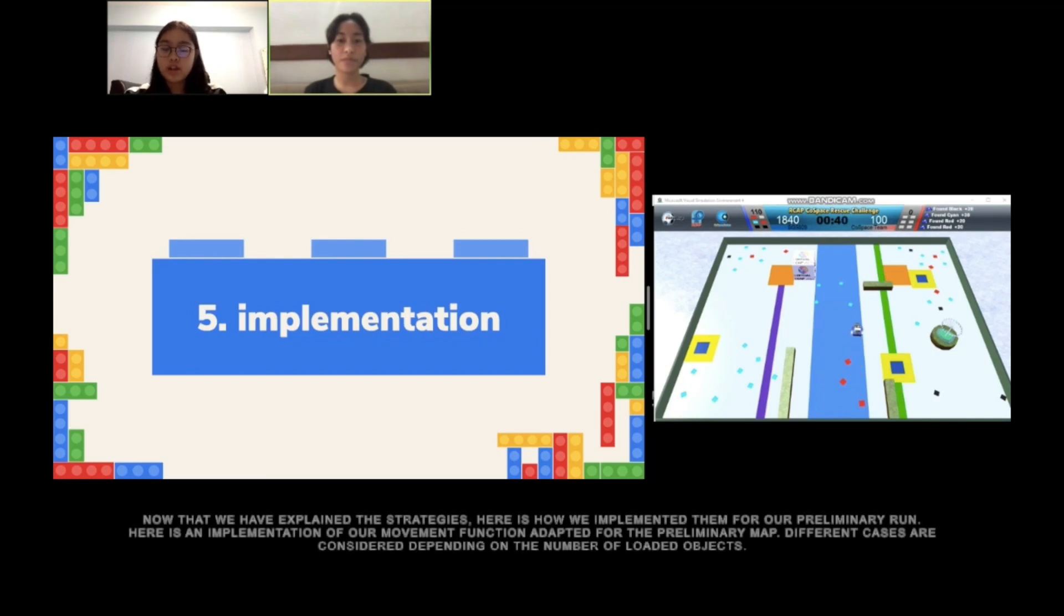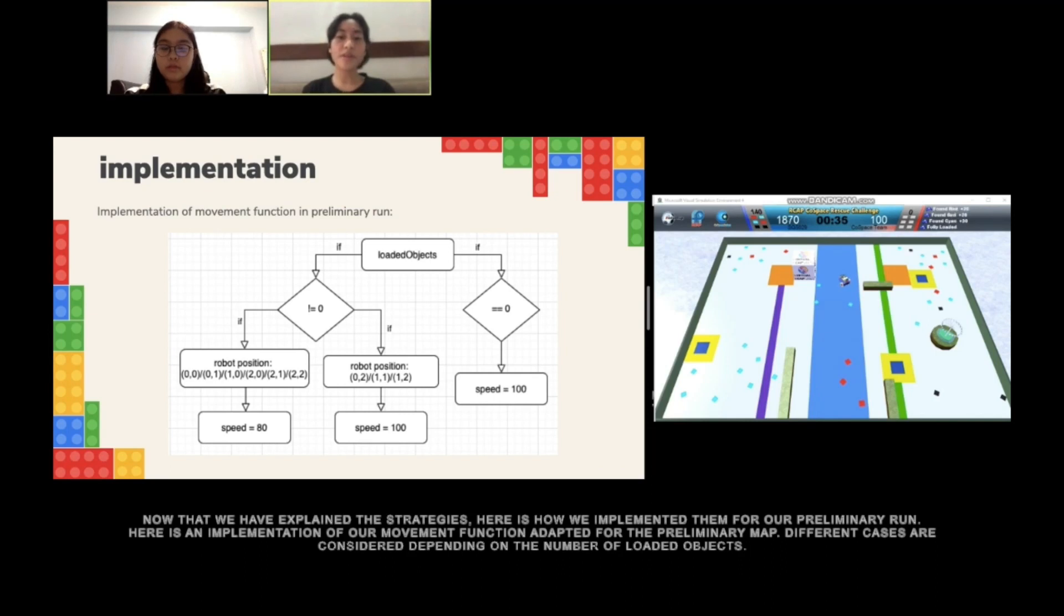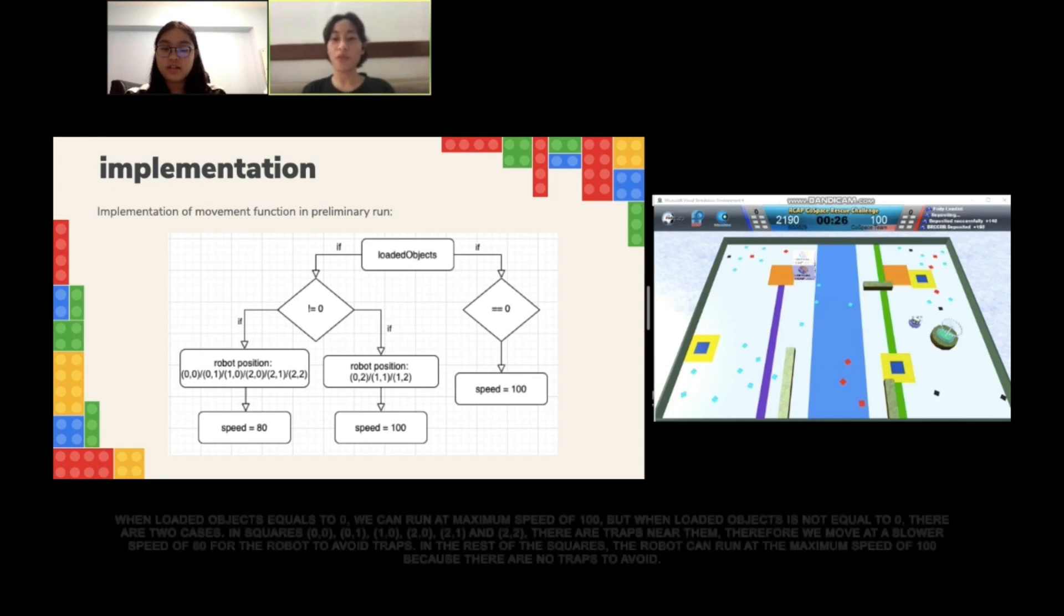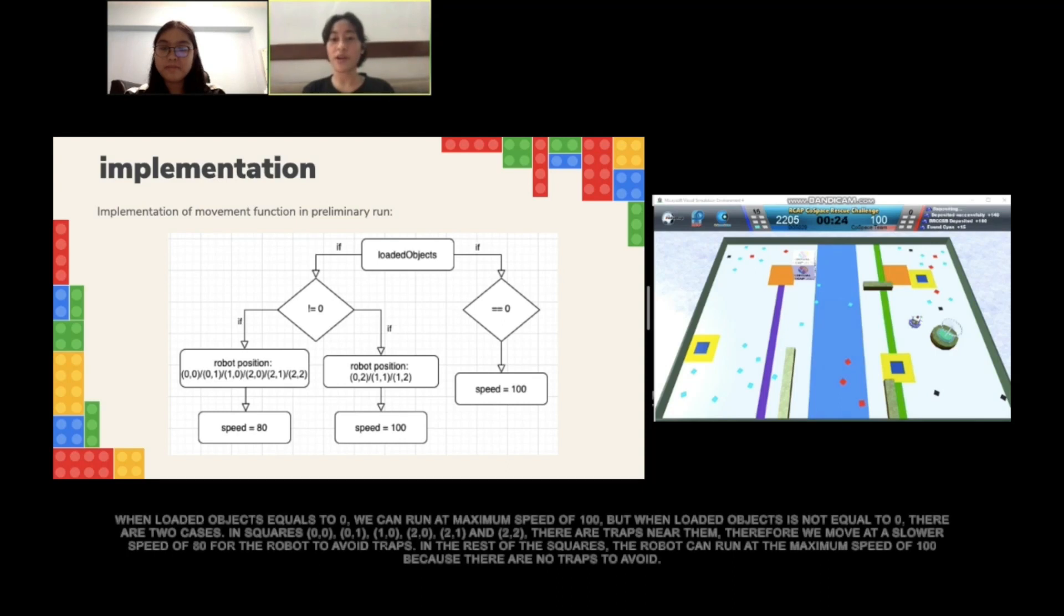Now that we've explained the strategies, here is how we implemented them for our preliminary run. Here is an implementation of a movement function adapted from the preliminary event. Different cases are considered depending on the number of loaded objects. When loaded objects equals 0, we can run at a maximum speed of 100. But when loaded objects is not equal to 0, there are two cases. In squares 0,0; 0,1; 1,0; 2,0; 2,1; and 2,2, there are traps near them. Therefore, we move at a slower speed of 80 for the robot to avoid traps. In the rest of the squares, the robot can run at a maximum speed of 100 since there are no traps.